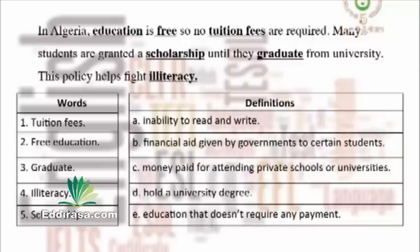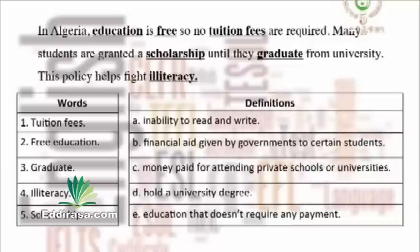Inability to read and write, financial aid given by government, money paid for attending, and education — all these are nouns. The only verb we have is definition D: hold a university degree. So it matches with graduate. Now let's see the other ones, starting with tuition fees.